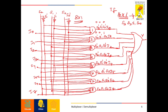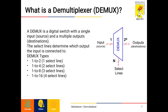Similarly, for a 16x1 MUX, the select lines will be 4: S3, S2, S1, and S0. Now let's get into the demultiplexer. What is a demultiplexer? A demultiplexer is a circuit with one input and many outputs. By applying a control signal we can steer the input to any output. A few types are 1-to-2, 1-to-4, 1-to-8, and 1-to-16 demultiplexer. It is a digital switch with a single input source and multiple output destinations.